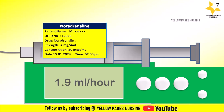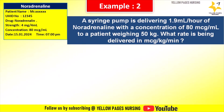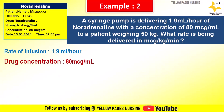Let's do the calculation with this second formula. Example 2: A syringe pump is delivering 1.9 ml per hour of noradrenaline with a concentration of 80 mcg per ml to a patient weighing 50 kg. What rate is being delivered in mcg per kg per minute?